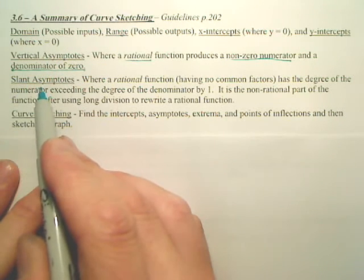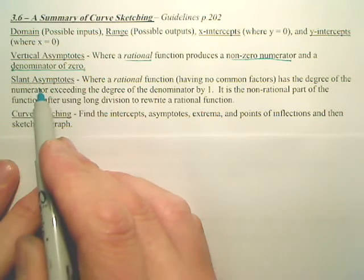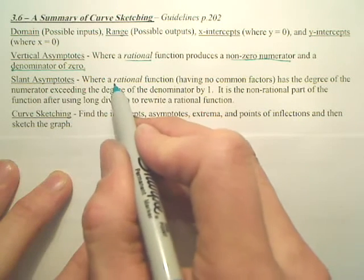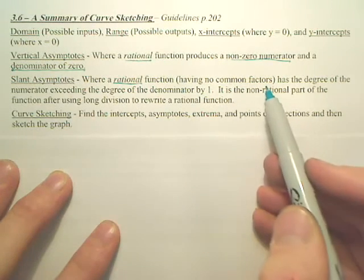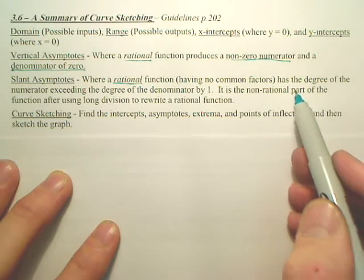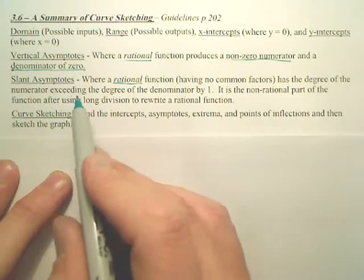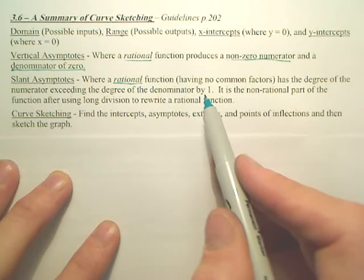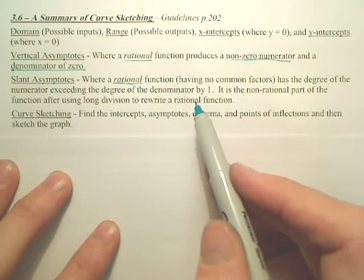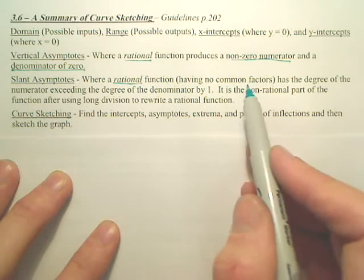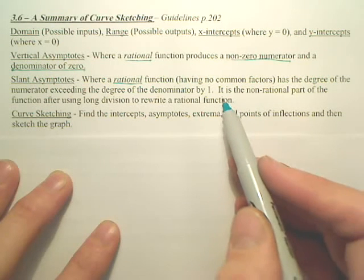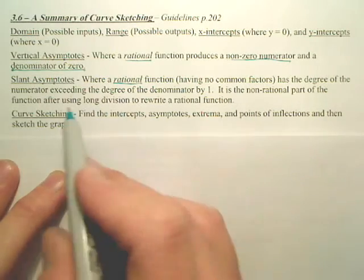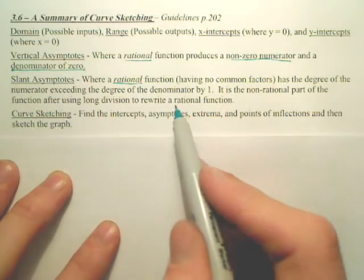Slant asymptotes, we've never talked about. We'll talk about this more later. But basically, slant asymptotes come when you have rational functions. You have no common factors, which we'll talk about. And it has a degree of the numerator exceeding the degree of the denominator by 1. So the numerator has an x cubed, the denominator of x squared. When there's a change of 1, you can have a slant asymptote. And when nothing factors out, meaning it's non-removable, it's not an asymptote.